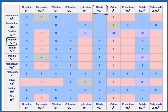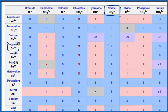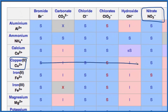NO₃⁻ — and you can see the nitrate ion: all of these have S, because they're all soluble. So these compounds bonded to the nitrate ion are going to be soluble — they'll dissolve in water. Copper-2 nitrate: we go down and over, and of course that's S for soluble.